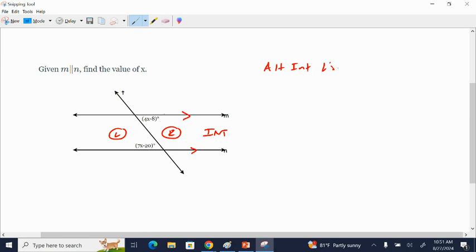And if my lines are parallel, that means that these guys are going to be congruent, which in terms of an equation means they're going to be equal to each other.